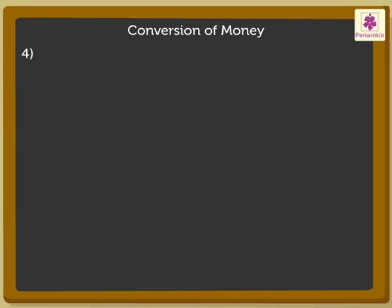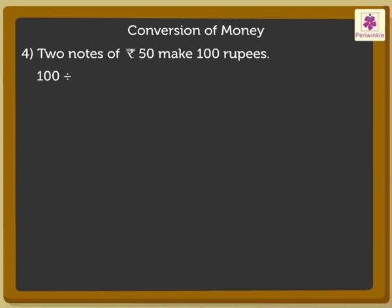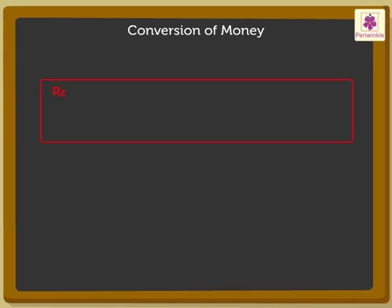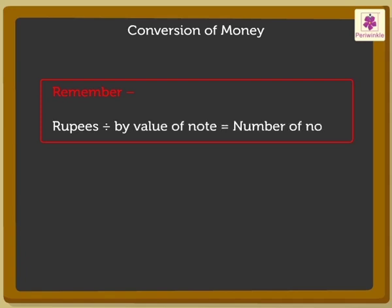2 notes of 50 rupees make 100 rupees. Here, 100 divided by 50 is equal to 2. That is, 50 plus 50 is equal to 100. So, kids, remember: rupees divided by the value of the note is equal to the number of notes.